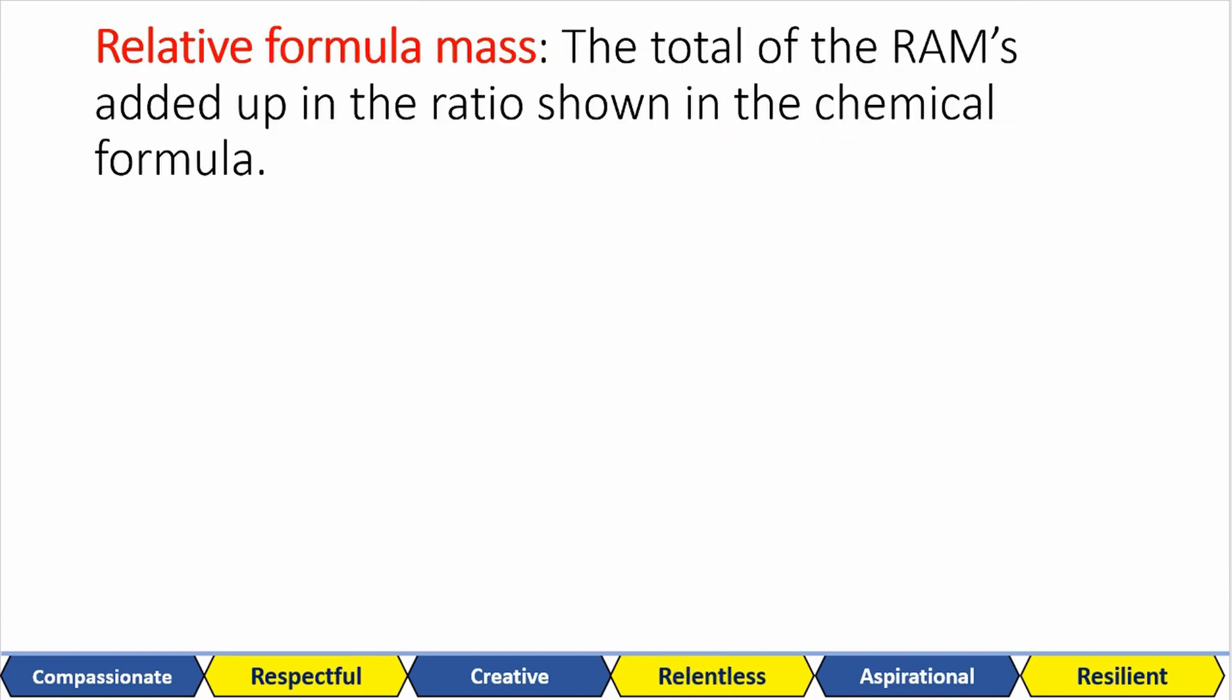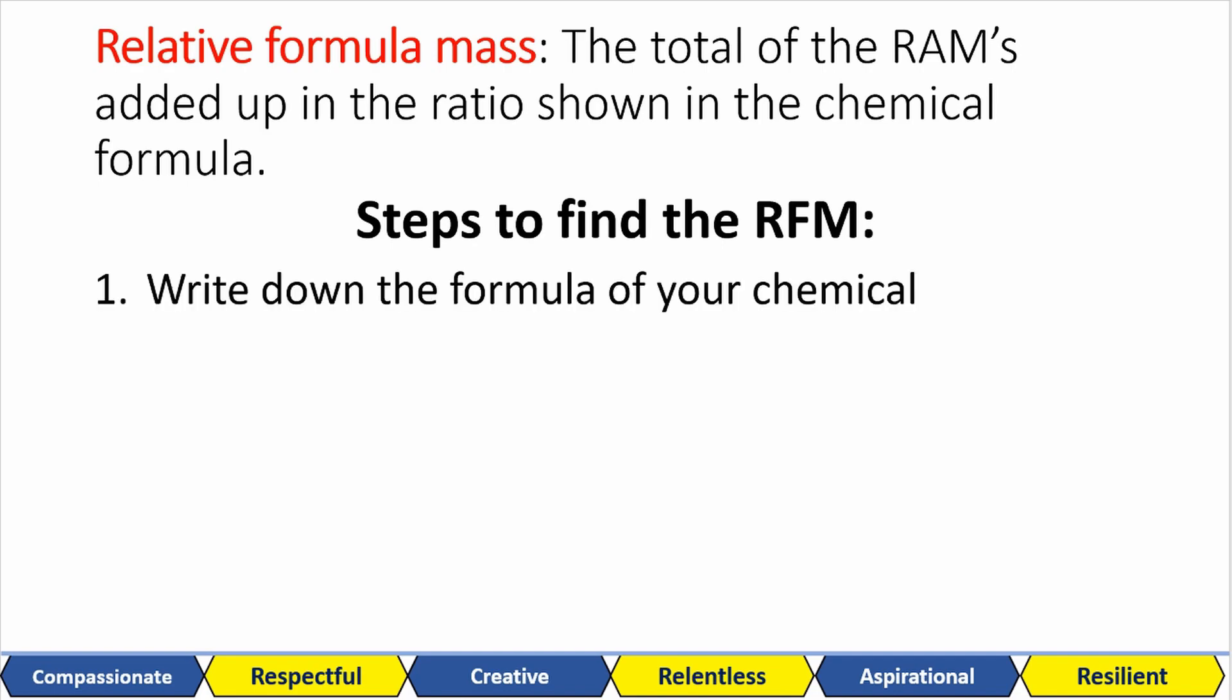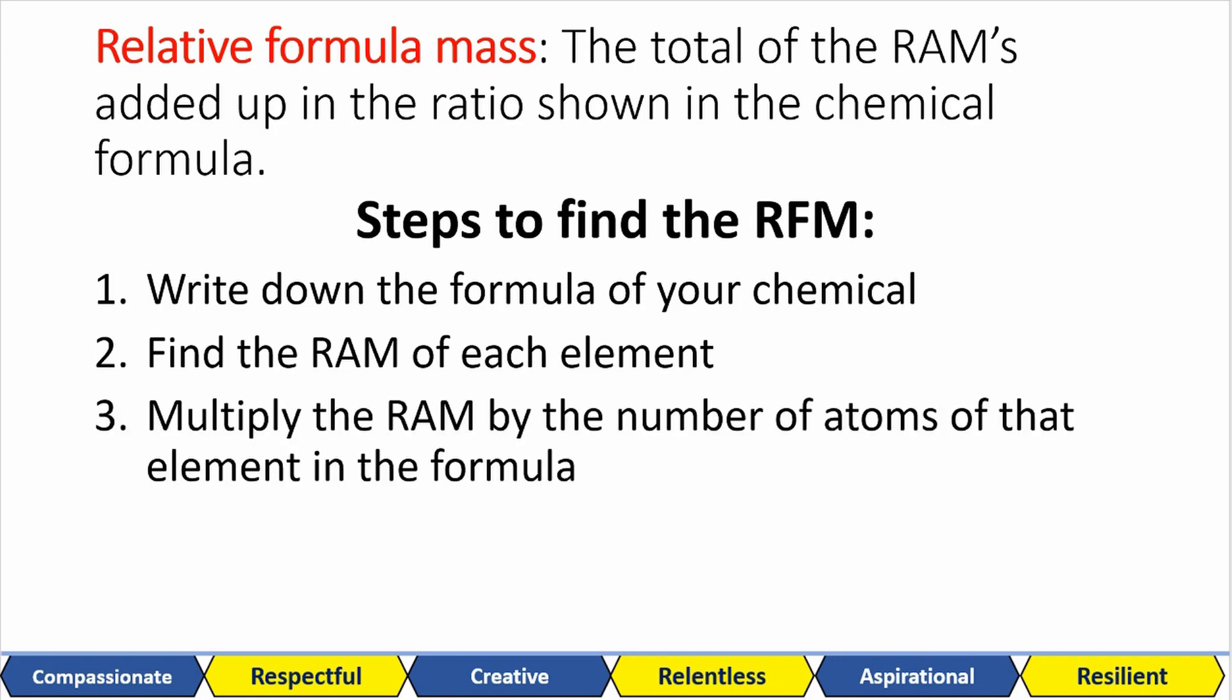Relative formula mass is the total of your rams added up in the ratio shown in the chemical formula. Take down these steps. Number one, you have to write down the formula of your chemical. Number two, find the ram of each element. Number three, you multiply the rams by the number of atoms of that element in the formula. And then finally number four, you just sum your values together.